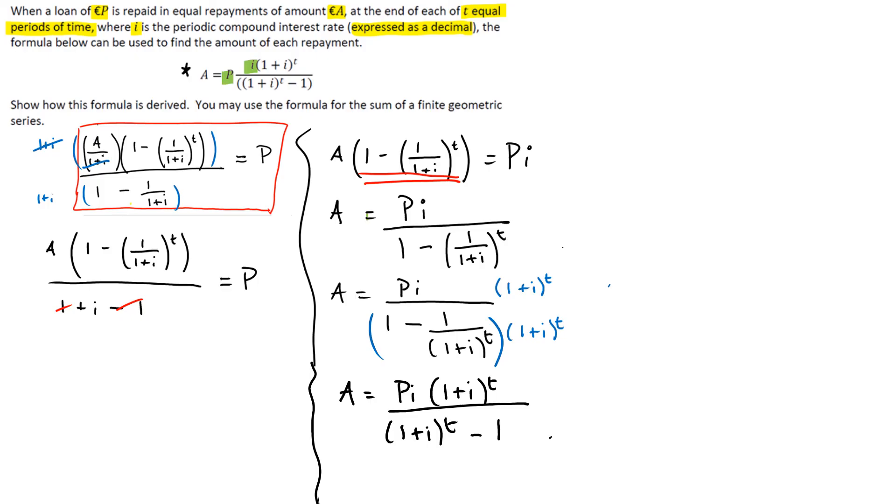And we now have exactly what they wanted us to have. I'm going to just restructure it slightly. 1 plus I to the power of T all over 1 plus I to the power of T minus 1 QED.